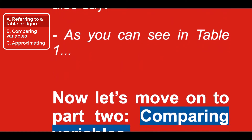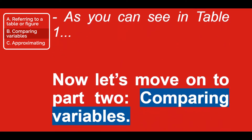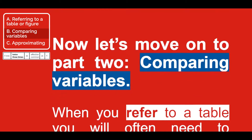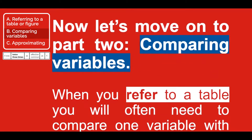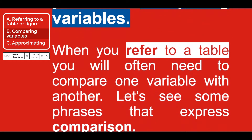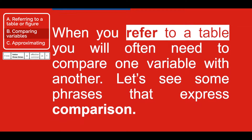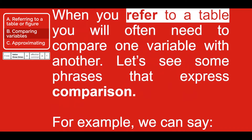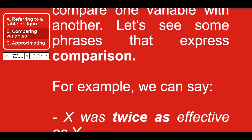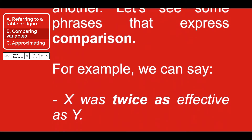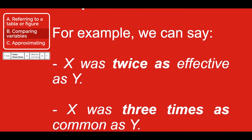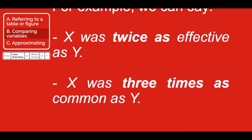Now, let's move on to part two: comparing variables. When you refer to a table, you will often need to compare one variable with another. Let's see some phrases that express comparison. For example, we can say: 'x was twice as effective as y,' or 'x was three times as common as y.'